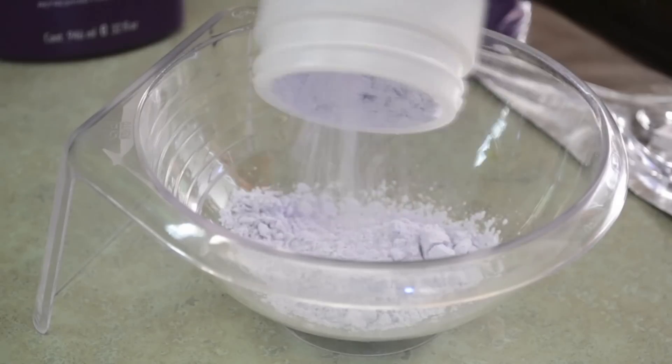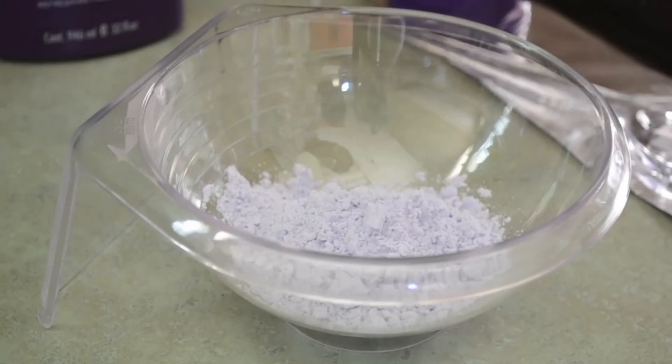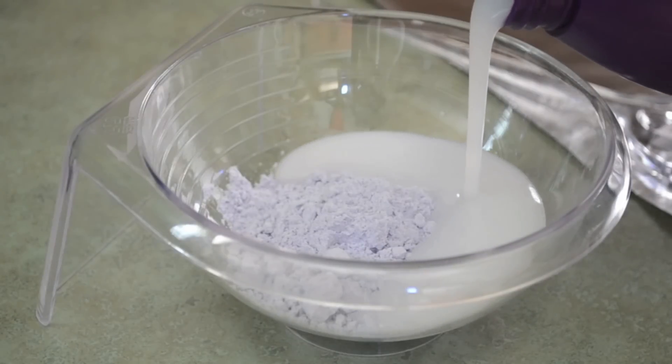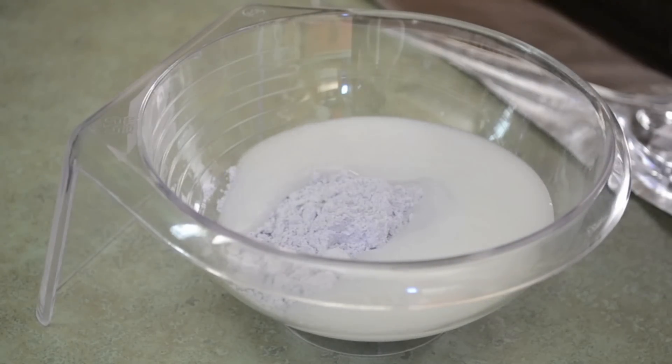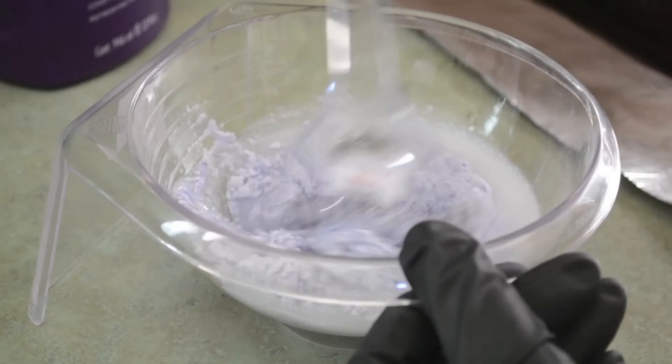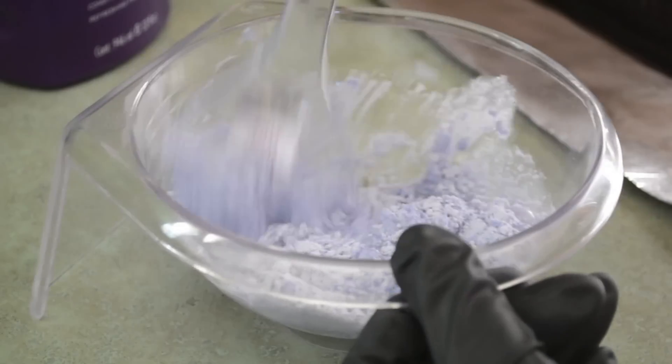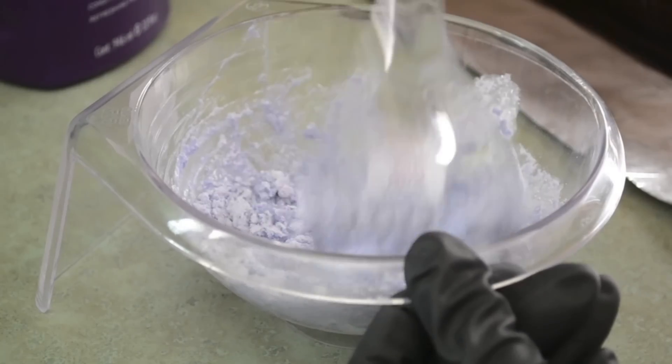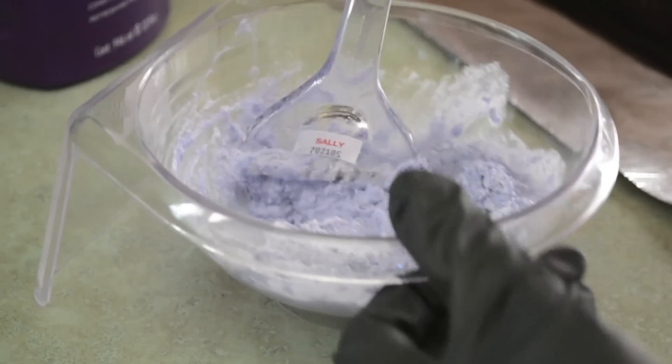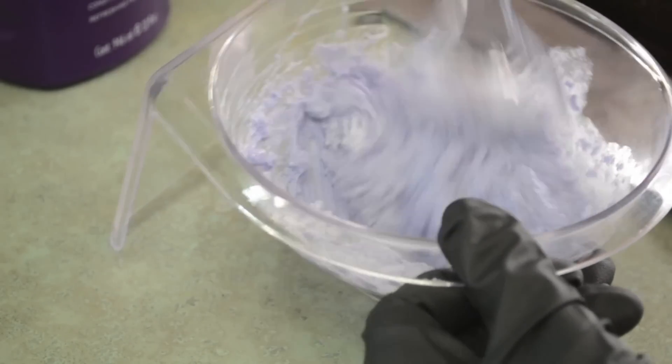I just eyeball measurements because it does not have to be precise to work. On the back of the bottle it says a 1 to 2 ratio, so I'm just going to keep mixing developer and powder bleach until I get a pasty consistency. As you can see, I do need to add more developer because it is a little bit too thick. We want it a little bit runny.